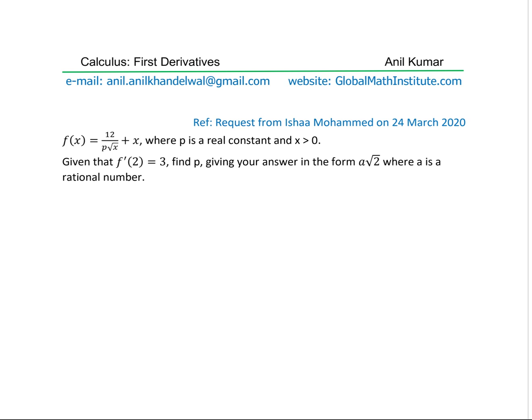The question here is f of x equals 12 over p square root x plus x, where p is a real constant and x is greater than 0. Given that f dash 2 equals 3, find p giving your answer in the form a square root 2 where a is a rational number.